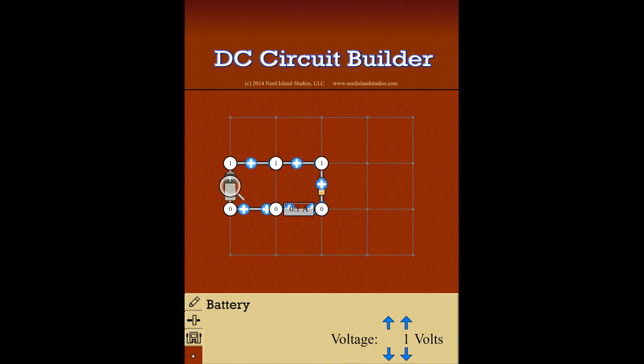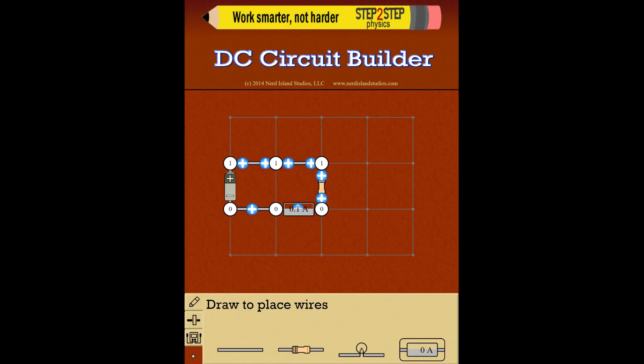And to find out the amount of voltage, we clicked on the second tab and we looked at the ammeter, which gives us a number. We look at the battery, which will also give us a number.